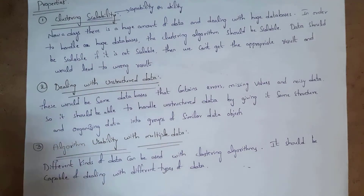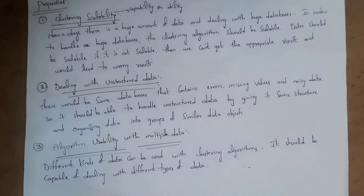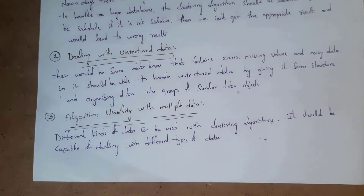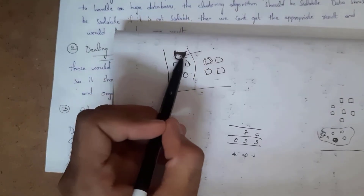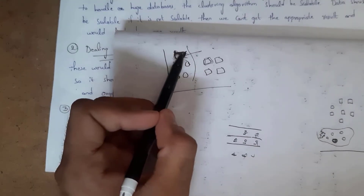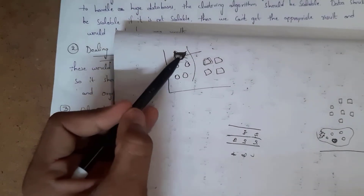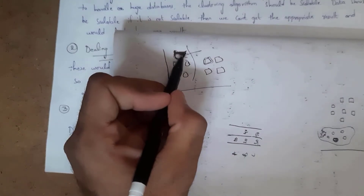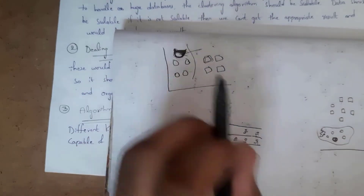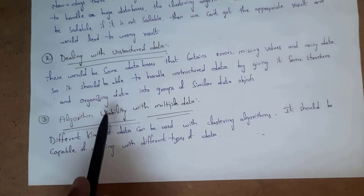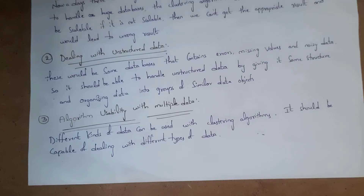The second property is dealing with unstructured data. Some databases contain missing values or errors, so the clustering algorithm should be able to handle unstructured data by giving it some structure and placing that data into a group of similar data objects. For example, if a subject is unstructured — not looking like a circle or a square — we give it structure by considering it as a circle and placing it in the circle category.